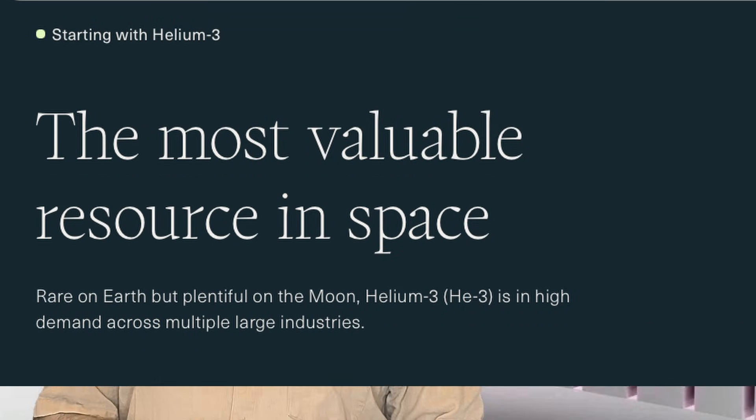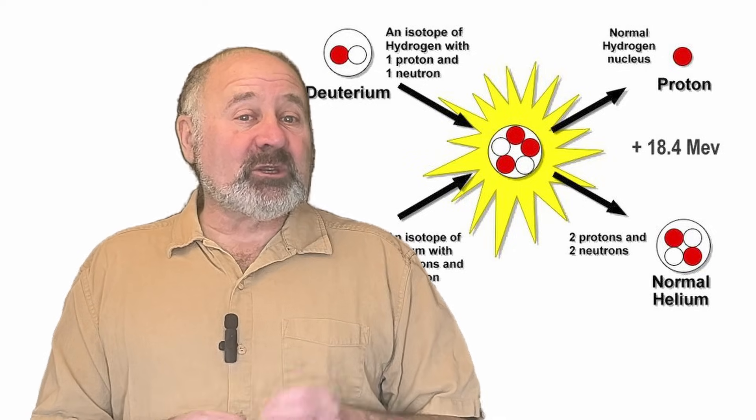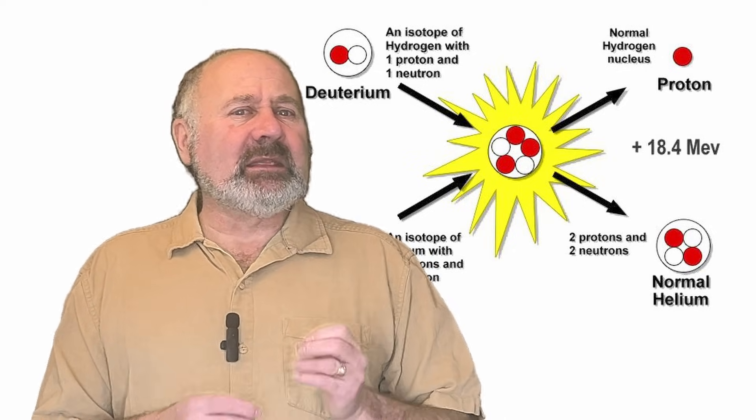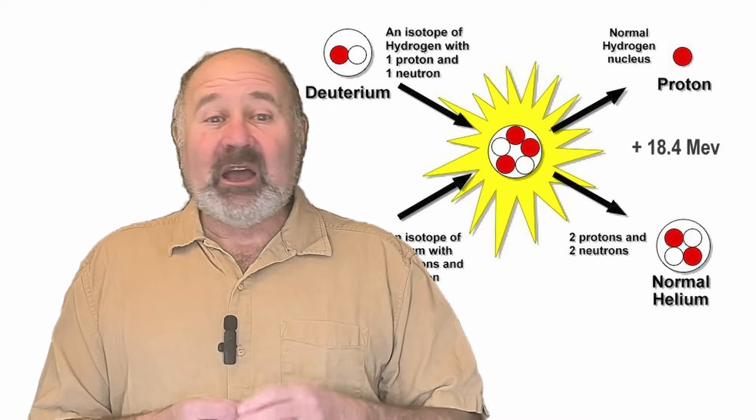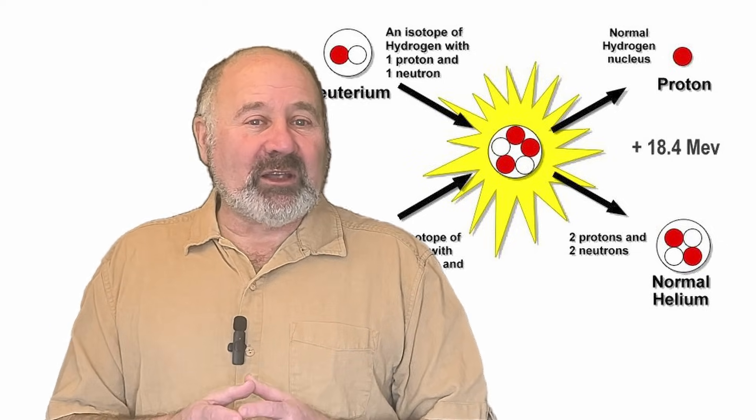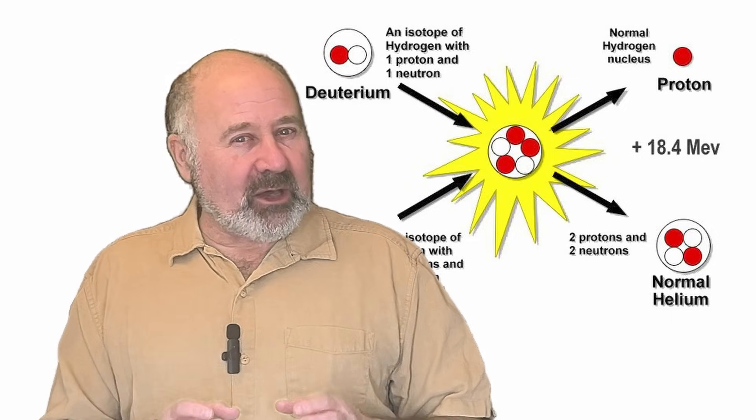Then we come to the third fusion reaction, the one Helion plans to use to generate electricity, deuterium and helium-3, which produces a proton and helium-4, and a bit more energy than the DT reaction. Since all of the reaction products are charged, that is, there are no neutrons, the energy stays inside the magnetic bottle.